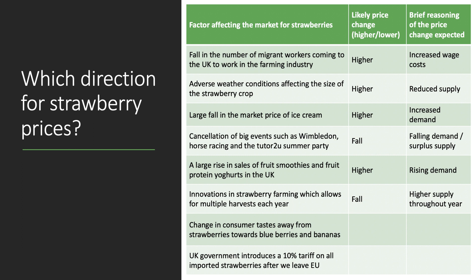Factor seven: a change in consumer tastes away from strawberries towards blueberries and bananas. What's going to happen to the price of strawberries? Probably a fall. A switch in consumer tastes and preferences brings about a change in demand — demand shifts to the left, quantity demanded falls relative to supply, and the price goes down.